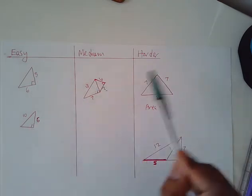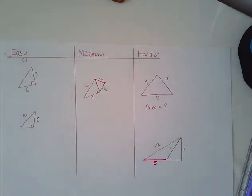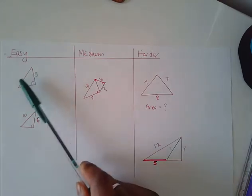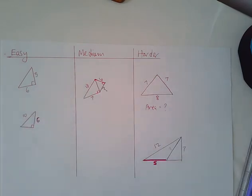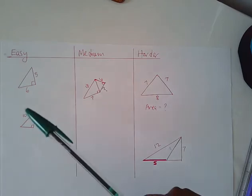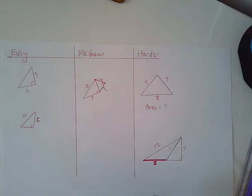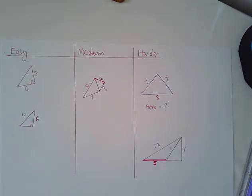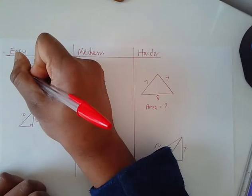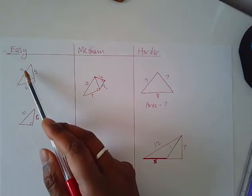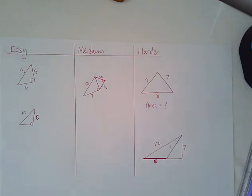When you see questions like this, you have to think about what topic it is. This is Pythagoras — some of you might think it's trigonometry or SOHCAHTOA, but clearly there are no angles involved in any of these questions. That's a big clue. It's not going to be SOHCAHTOA or trigonometry. Think about what you're after: if you want to work out the third side and two sides are given, that's Pythagoras. For Pythagoras to work, it has to be a right-angle triangle.